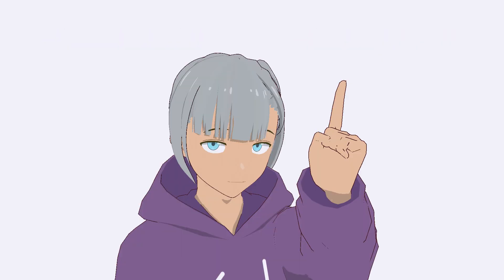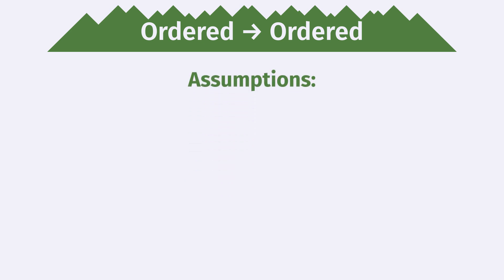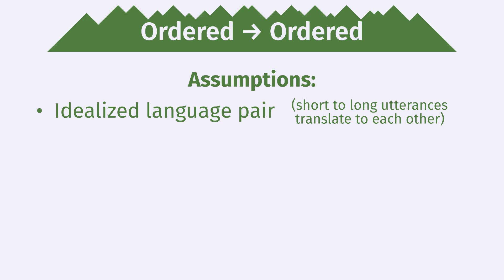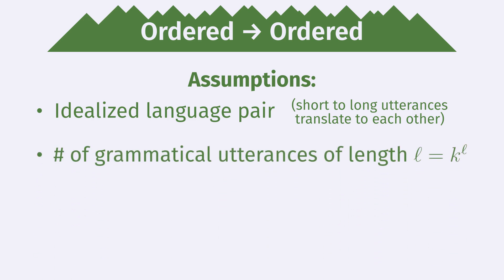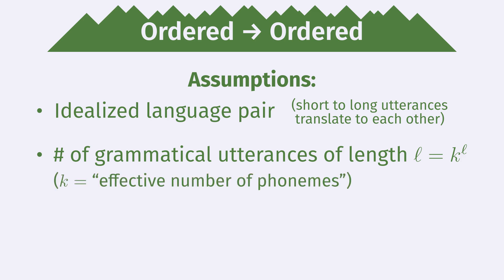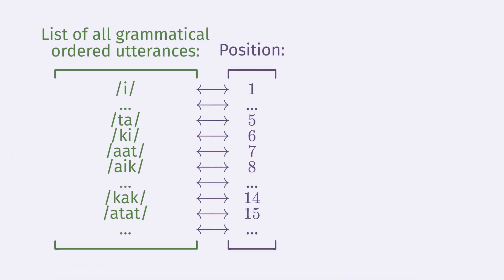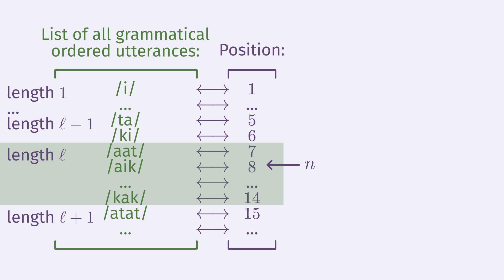First, let's look at the case of translating from one ordered language to another. Since languages are messy, we make a few simplifying assumptions: we assume the two languages form an idealized language pair, and that the number of grammatical utterances that are L phonemes long is exactly K to the Lth power for some number K. For natural languages this should be approximately true, and K can be interpreted as the effective number of phonemes after taking into account phonotactics, grammar, vocabulary, etc. If we have an ordered language with effective phoneme count K, we want to find the positions N on the list occupied by utterances of length L.